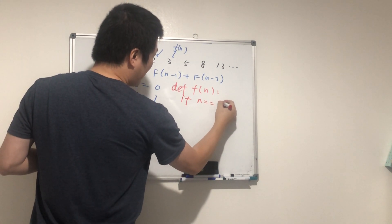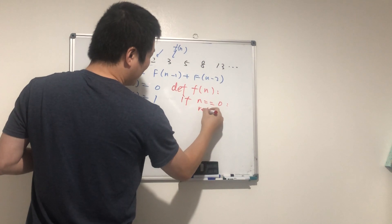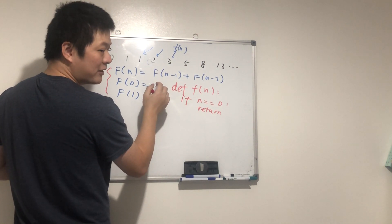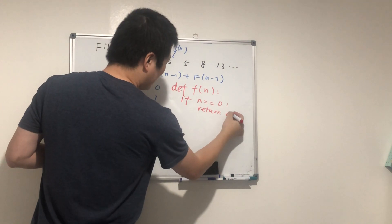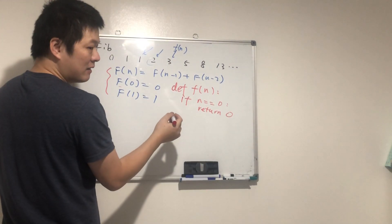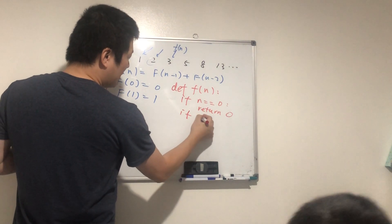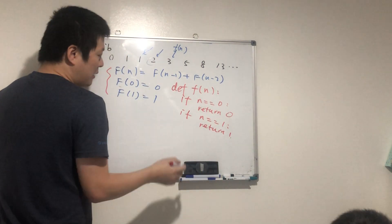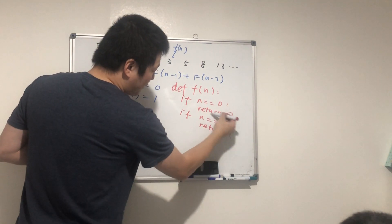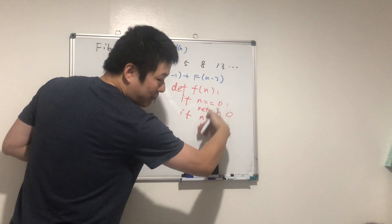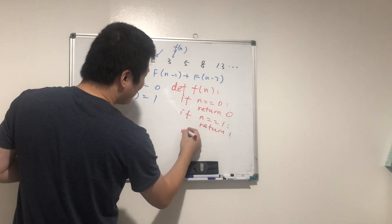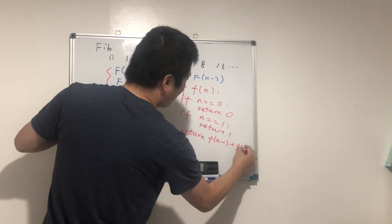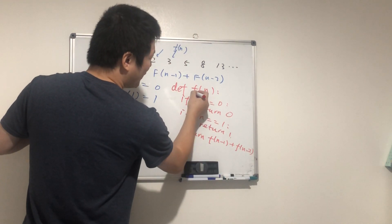If n equals zero, we return zero. If n equals one, we return one. When the computer executes 'return,' it returns that value immediately without going further. Otherwise, we return f(n-1) plus f(n-2) — this is the function calling itself, which is recursion. We talked about recursion yesterday.